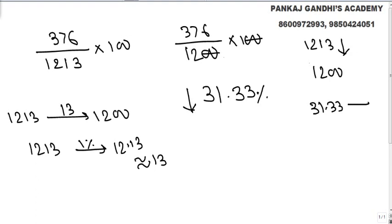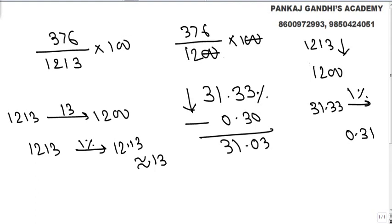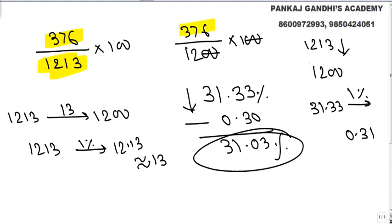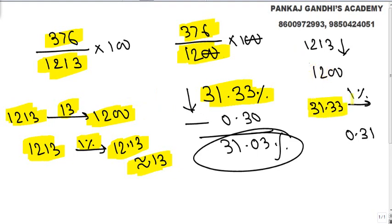We get approximately 31.33. 1 percent of 31.33 is 0.31, so we reduce by approximately 0.3, giving us very close to 31 percent. In summary: we were asked to solve 376 is what percent of 1213. We make the denominator a round figure. Since we reduced the denominator by close to 1 percent, the answer is also reduced by close to 1 percent.